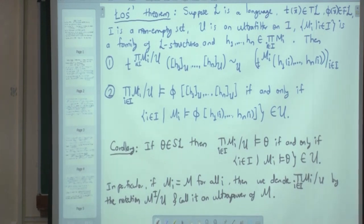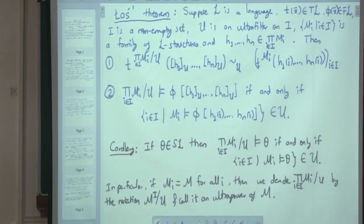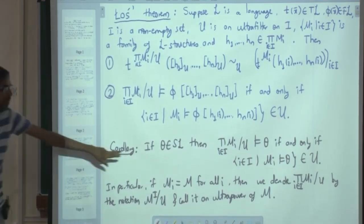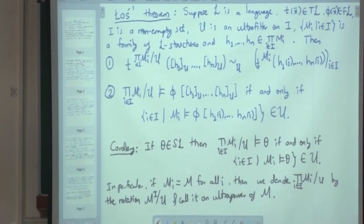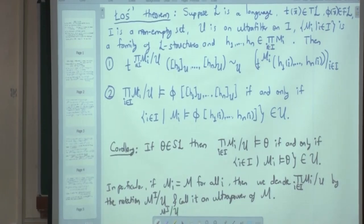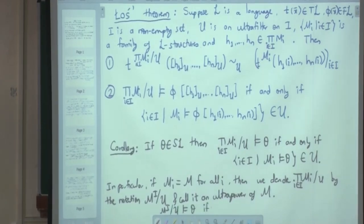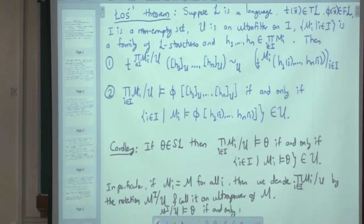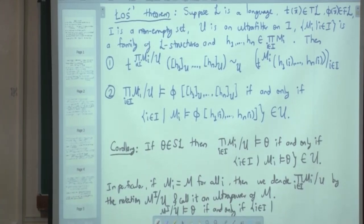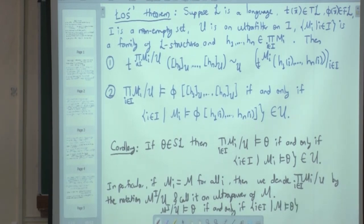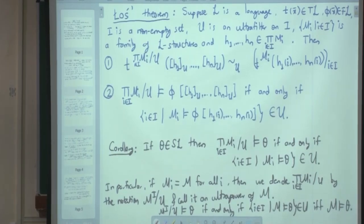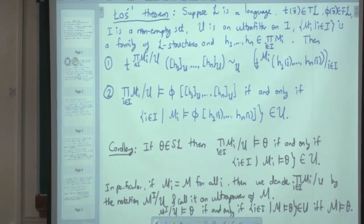The corollary for ultrapowers becomes: M^I/U satisfies theta if and only if M satisfies theta. This is our transfer principle. We said that R satisfies phi if and only if star R satisfies phi — and that is precisely what we have written here as a consequence of Łoś's theorem.